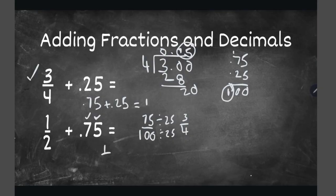Now we can add 1/2 plus 3/4. We need a common denominator. Let's look at the factors: 2 and 4. 2 goes into 4 two times, so we'll multiply the numerator and denominator of 1/2 by 2. 1 times 2 is 2, and 2 times 2 is 4. Now we have 2/4.